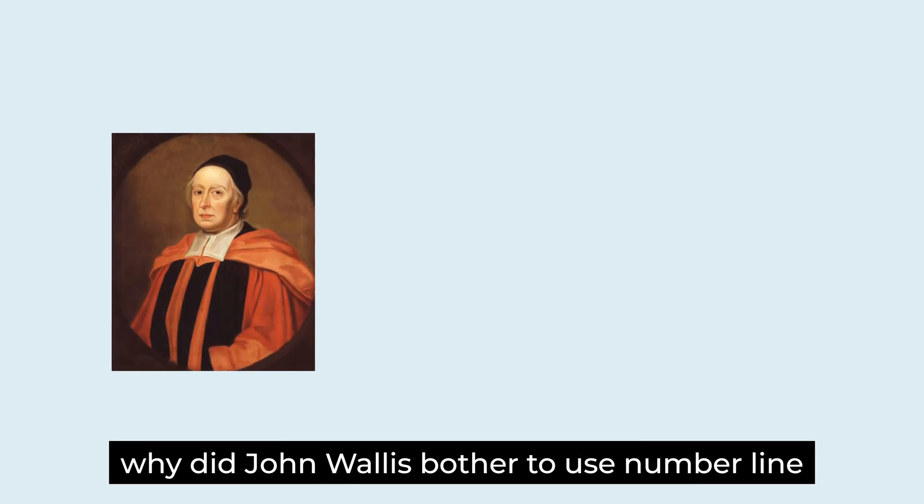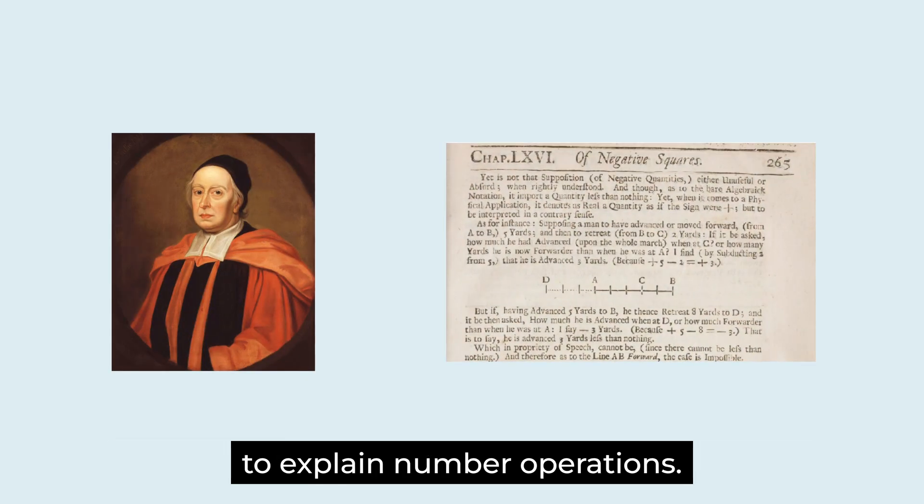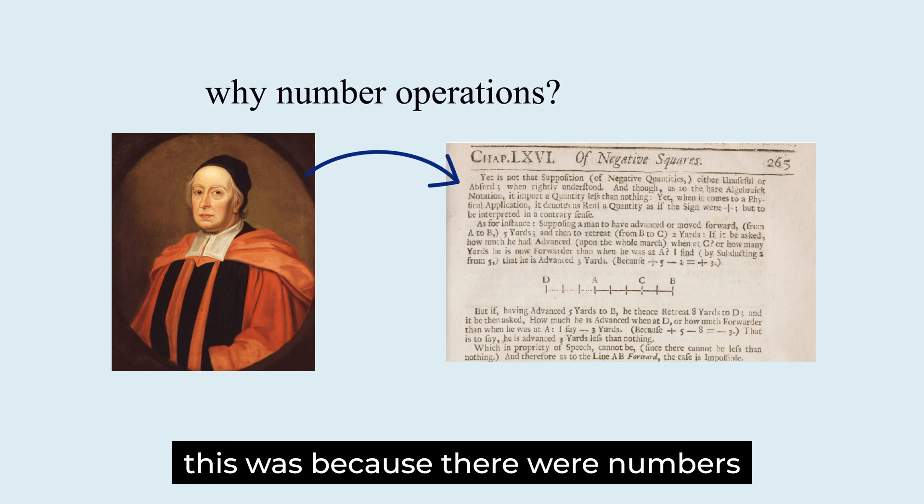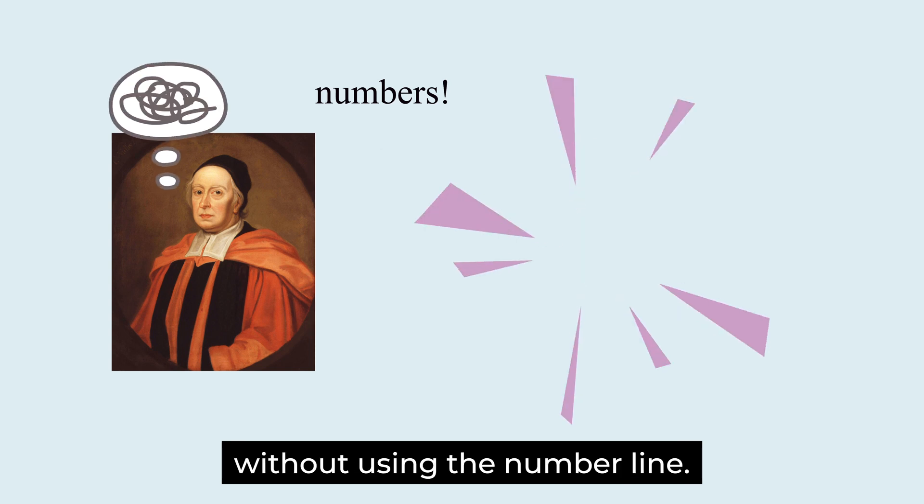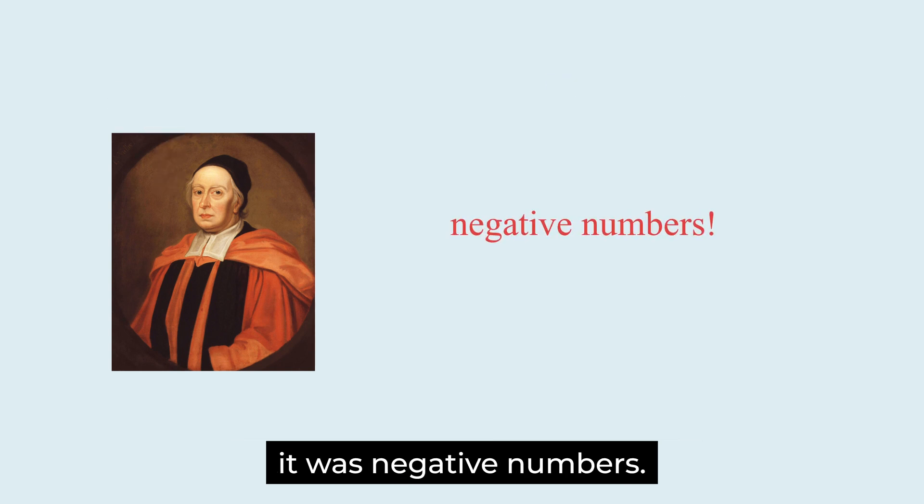Why did John Wallis bother to use number line to explain number operations? This was because there were numbers that were difficult to explain without using the number line. It was negative numbers.